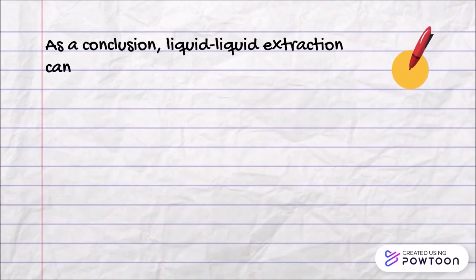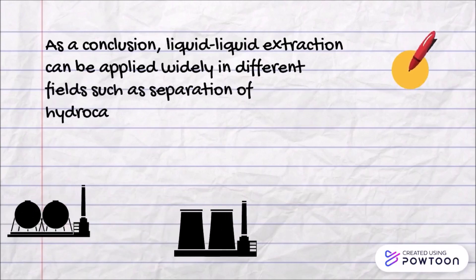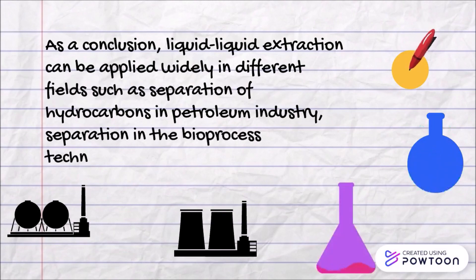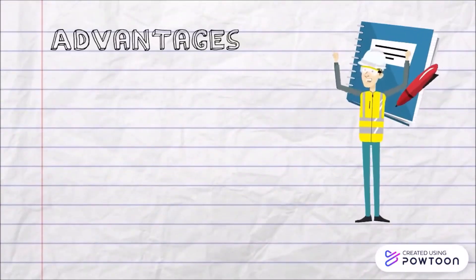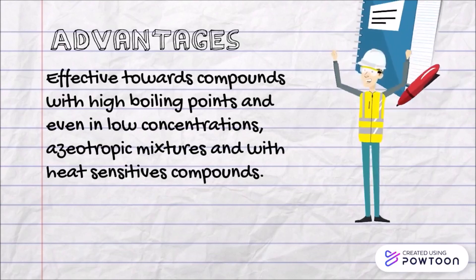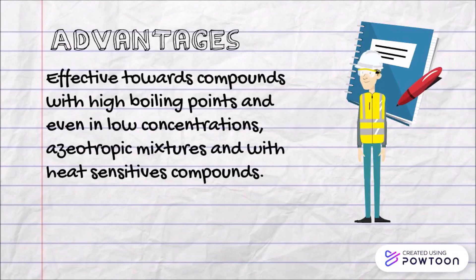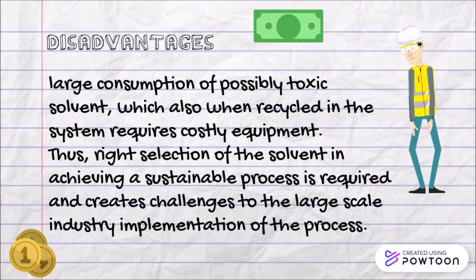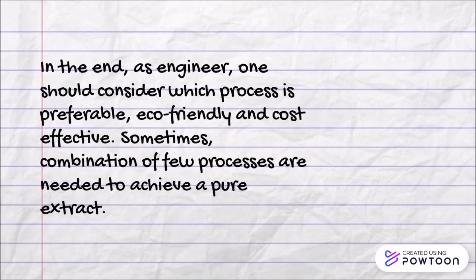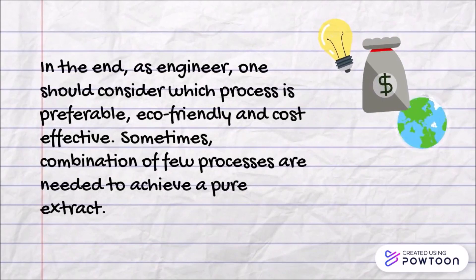In conclusion, liquid-liquid extraction can be applied widely in different fields such as separation of hydrocarbons in the petroleum industry, separation in bioprocess technology, oil extraction, and protein purification. The advantages of liquid-liquid extraction include its effectiveness towards compounds with high boiling points, even at lower concentrations, azeotropic mixtures, and heat-sensitive compounds. The disadvantages include large consumption of possibly toxic solvents, which when recycled require costly equipment, and challenges in achieving a sustainable process for large-scale industrial implementation. As engineers, one should consider which process is preferable, eco-friendly, and cost-effective; sometimes combinations of processes are needed to achieve a pure extract.